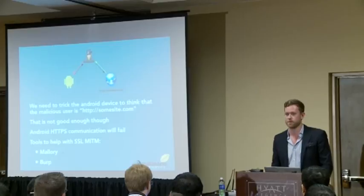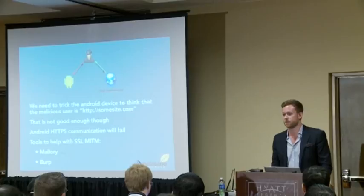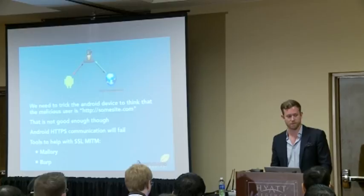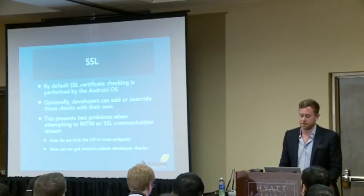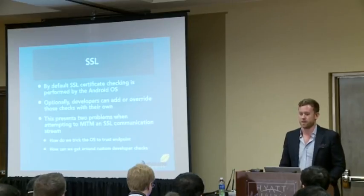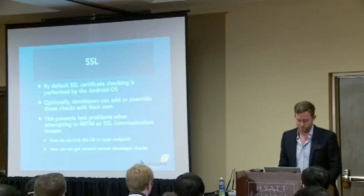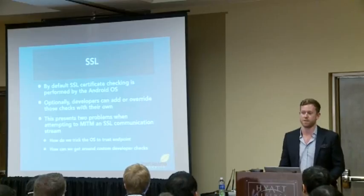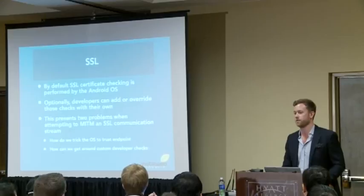Two tools I typically use for this are Mallory and Burp. Mallory uses IP tables to do a transparent proxy, and Burp — I'm sure everyone's used it. SSL is handled by the Android OS, but there's an option for developers to take control of that negotiation. This presents two problems: one, how do you convince the OS to trust the endpoint? And two, if there's a developer check, how do you get around that?